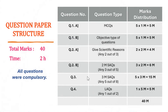Talking about the question paper structure, the paper followed the specimen paper or the model paper which was released by the board. There were four questions. Question 1a was of MCQ type — five MCQs each carrying one mark. Question 1b was of objective type — five questions each carrying one mark. Question 2a was 'give scientific reasons' — students had to attempt any two out of three, each question carrying two marks.